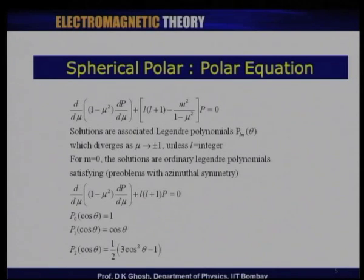It is known that the solutions of this equation will diverge as mu goes to plus or minus 1 unless l happens to be an integer. In other words, physically meaningful solutions exist only when l is an integer. So we have established that m must be an integer (from single-valuedness of the azimuthal equation) and l must also be an integer. We will later see that there is a specific relationship that must exist between the values of m and l.